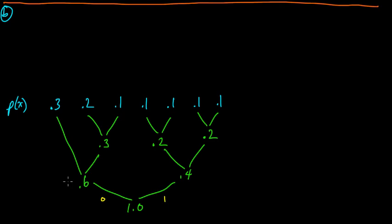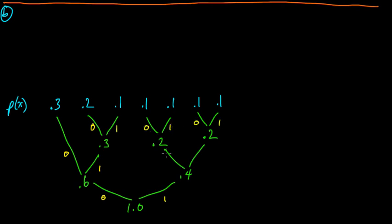Now let's label these. I always tend to do it this way, though it's not particularly important — I could go one-one, zero, or switch zero and one. I usually do zero, one, zero, one. The important thing is that each branching has a different symbol, and these symbols are from our code alphabet. I'm going to do this one with b=2, so this will also be a binary case.